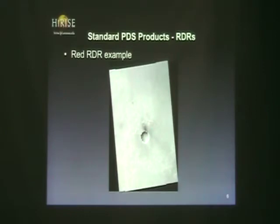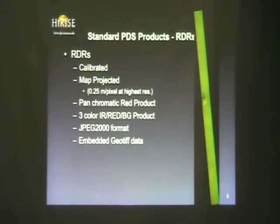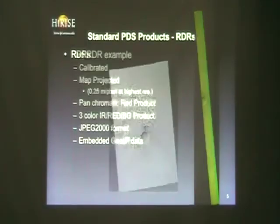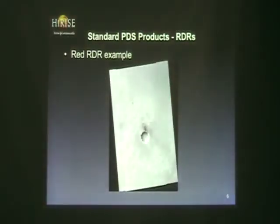This is an example of a panchromatic red RDR, actually from different observations but the same area, focusing in on Victoria Crater.